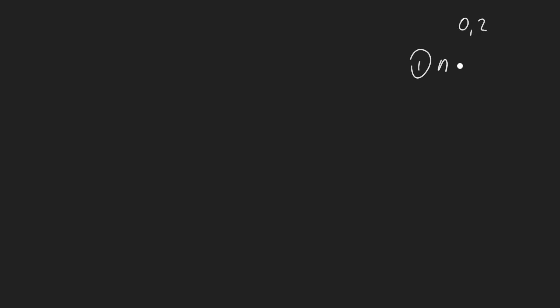Let's solve it step by step. The first requirement is that it's a full binary tree, so each node should have zero or two children. This means our input n should be odd. If n is even or equals zero, we return an empty result right away.